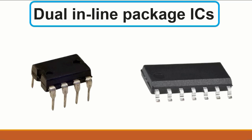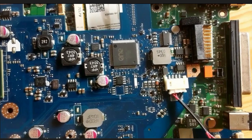Welcome to part 3, where I'm going to teach you all electronic component names, pictures, symbols, and purposes. The next component is the DIP, or Dual Inline Package, IC. I'm going to teach you many ICs and show you the differences between them. Basically, with a DIP IC, you will find the pins or terminals on just two sides, as you can see here on this motherboard.